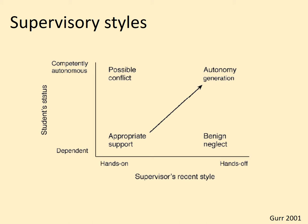As the student hopefully moves from dependent to autonomous — which is generally what we're aiming for in any type of education — the supervisor might start off more hands-on, giving advice, and then gradually let go. However, that's not always what happens. You might have someone who's hands-off all along, or someone who's not good at relinquishing control, and mismatches between supervisor style and student needs can lead to conflict.